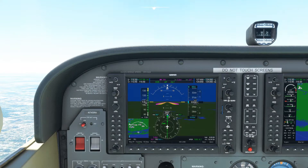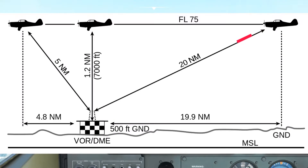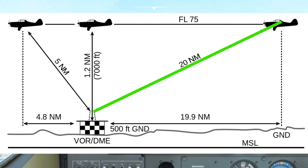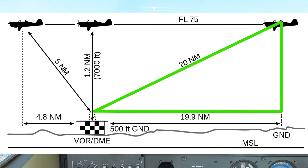DME works on a principle of interrogate and response — it sends a message to the DME station and then receives a reply, and calculates the distance from the station based on the time taken to receive the reply. Given the way this is calculated, this will always be an exact distance between the aircraft and the DME station. If we think of this as a right angle triangle, we are therefore measuring the hypotenuse, which is the longest side of the triangle, and will therefore give a figure which is a higher value than the actual distance over the ground to the station. This is called slant range.